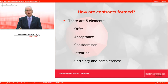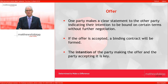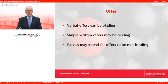The first element is offer. One party makes a clear statement to the other, indicating their intention to be bound on certain terms without further negotiation. If the offer is accepted, a binding contract will be formed. A formal written contract stating 'sign here' is an obvious example. Verbal offers can also be binding if accepted. Simple written offers may also be binding, for example, email exchanges or a contract written on a napkin in a restaurant.